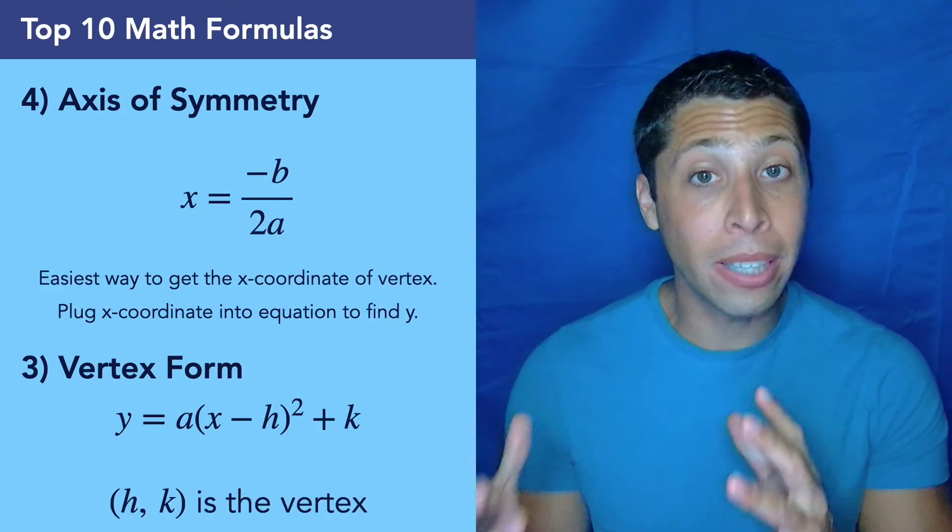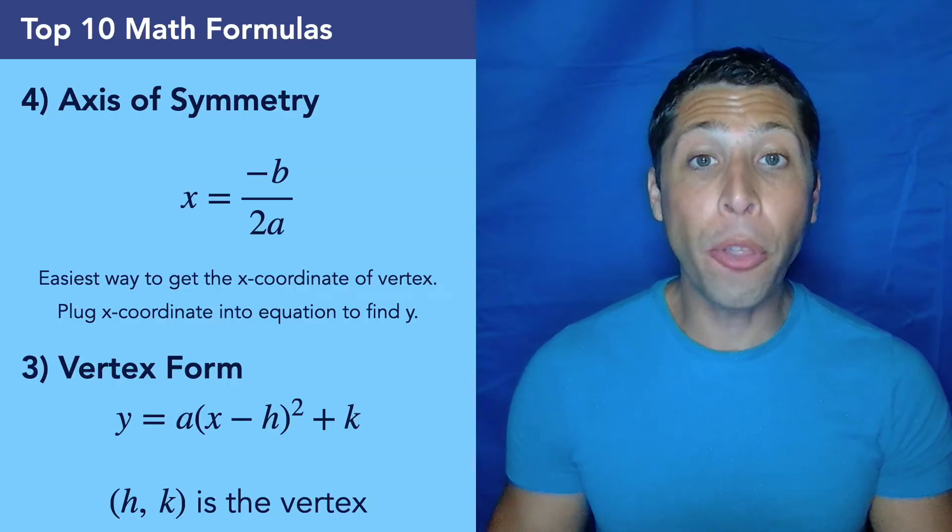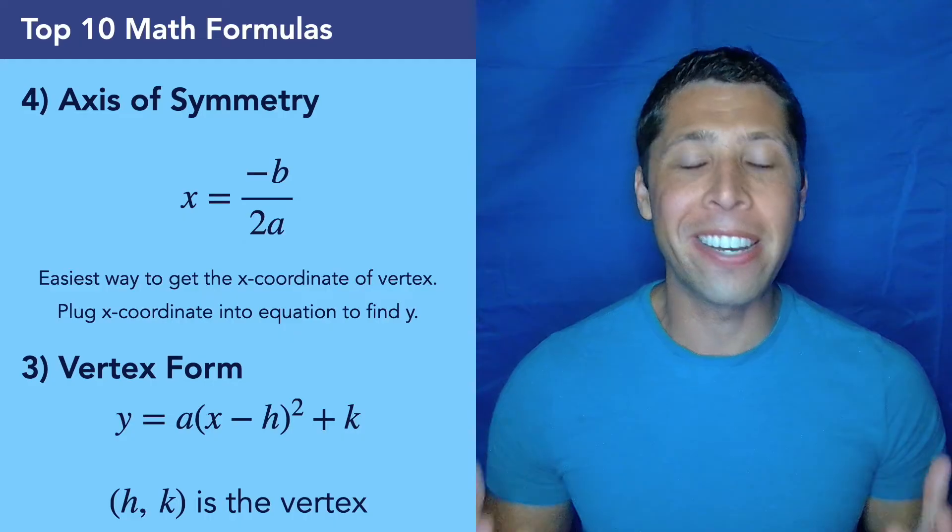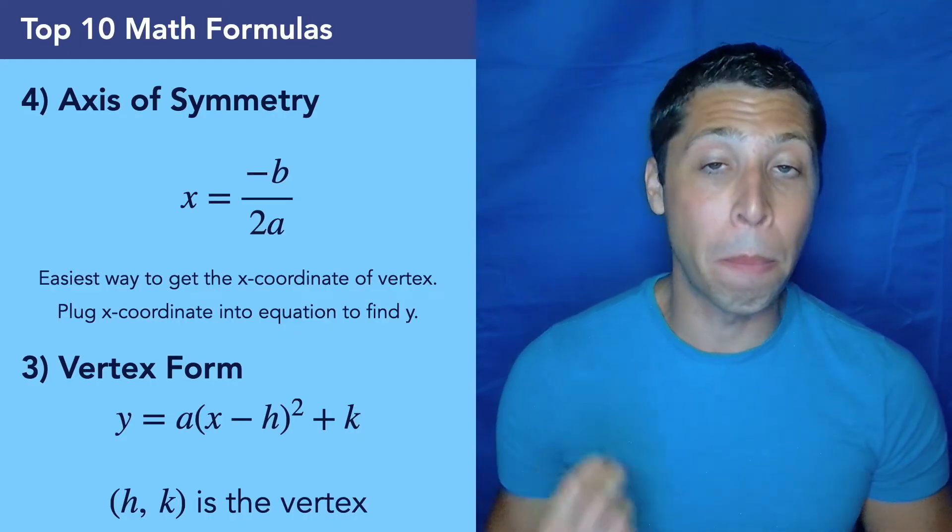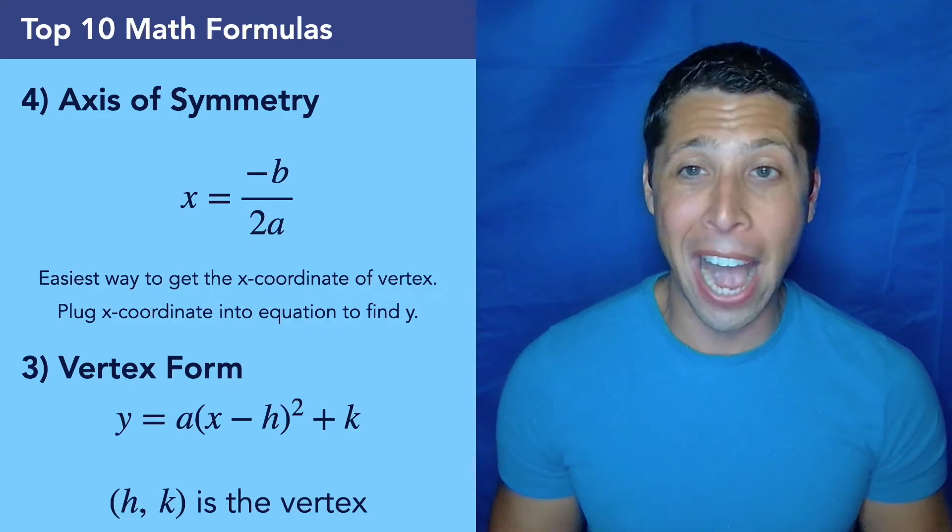The next two formulas are also linked. They're about parabolas again, about quadratic equations. And they're both about the vertex, which is something that everybody learns in school, but for some reason everybody forgets. Remember, the vertex is the maximum or minimum point of a parabola. It's where it turns around. And so the SAT loves to ask about it.